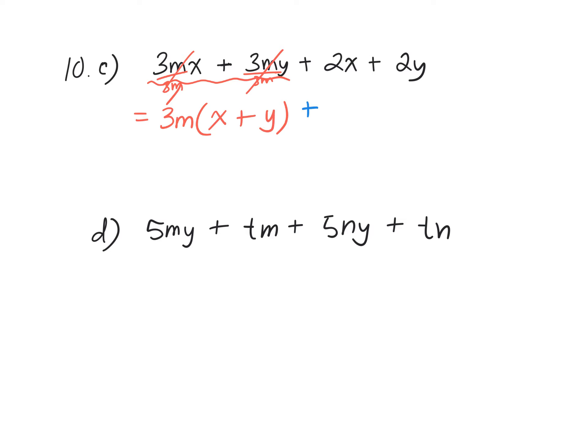And the second two terms are divisible by two. They don't have any variables in common, so we're left with the X plus the Y. Same bracket. What's the final answer? 3M plus two times X plus Y.